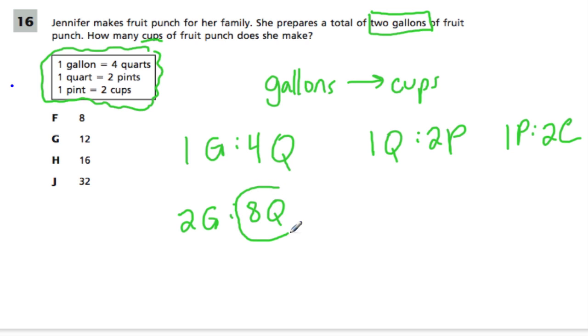So now I'm going to use this information and apply it here. We've gone away from gallons, we now know how many quarts we have. So instead of 1 quart for 2 pints, I need to know how many pints there are in 8 quarts. Because eventually pints will tell me how many cups we have. So if 1 quart is 2 pints, then 8 quarts is 16 pints.